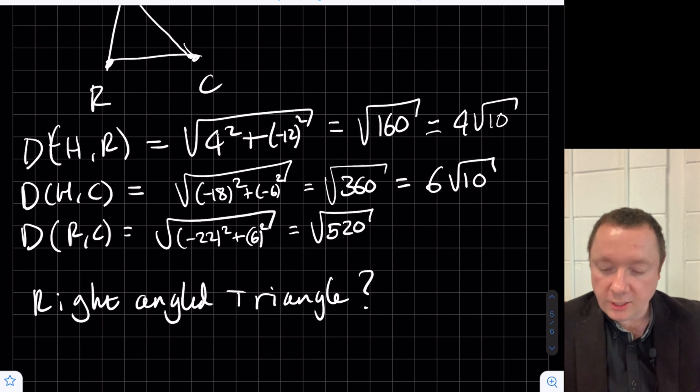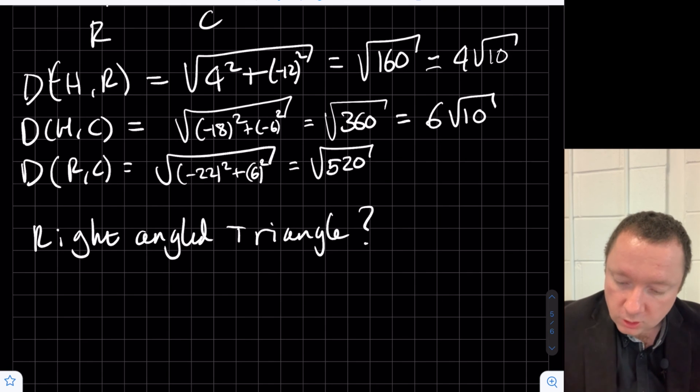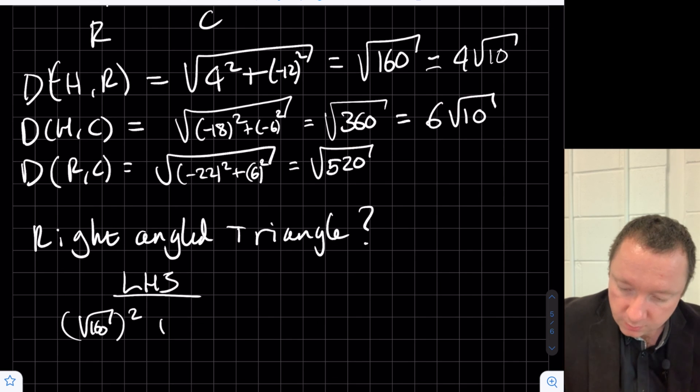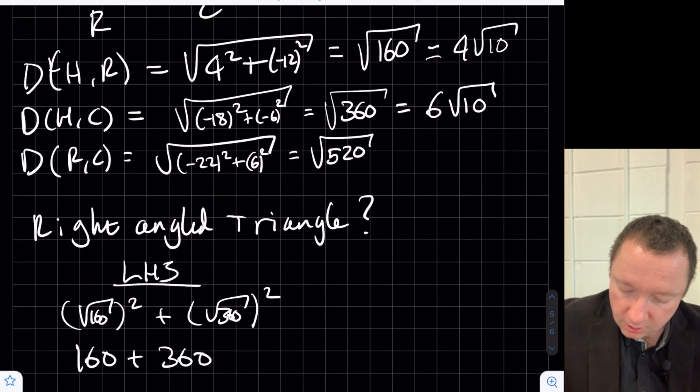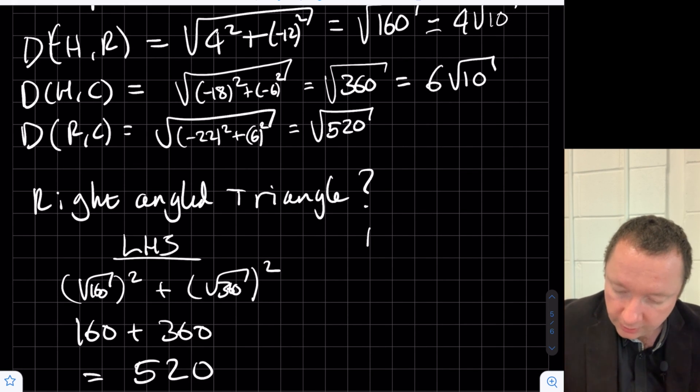Let's check the two short sides, squared, and add them together. So let's look at our non-simplified ones because they're easier to square instead of trying to square these. So on the left-hand side, we've got root 160 squared plus root 360 squared, or in other words, 160 plus 360, which equals 520. On our right-hand side, we have got root 520 squared, which is 520.